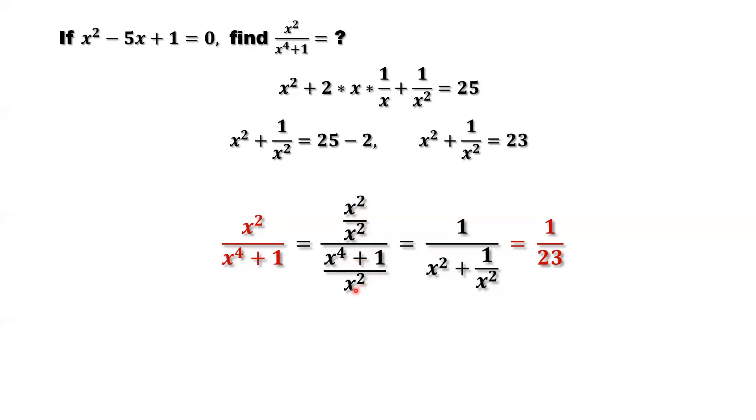Denominator divided by x squared is x squared plus 1 over x squared. You can see here x to the power of 4 divided by x squared is x squared. 1 divided by x squared is 1 over x squared. What is this? Let's mark it.